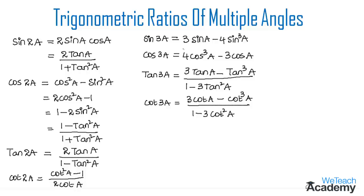There is a similarity between tan and cot, but the main difference is in the ratios. In the formula for tan 3A we get the formula in terms of tan, whereas in the formula for cot 3A we get the formula in terms of cot. This is the main difference between both these formulas.